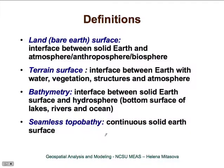Let's first set some definitions. We define land surface, or bare earth surface, as an interface between solid earth and either atmosphere, man-made structures, biosphere, or vegetation. A more complex surface is the terrain surface, which is an interface between earth — including water surface, vegetation such as trees and bushes, and human-made structures — and the atmosphere. It is essentially a bare earth surface with everything on it. We also have bathymetry, which is the interface between solid earth and the hydrosphere — describing the bottom surface of lakes, rivers, and ocean.